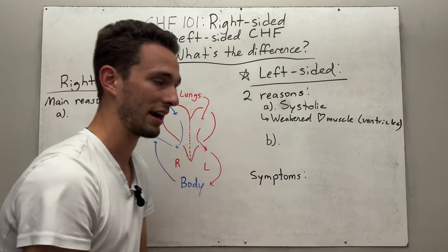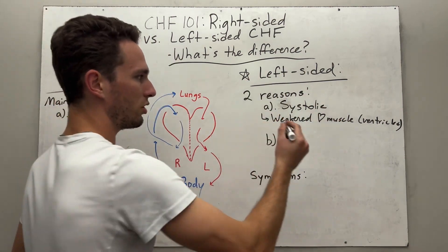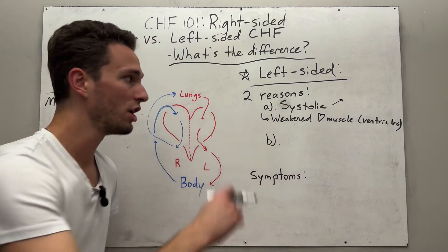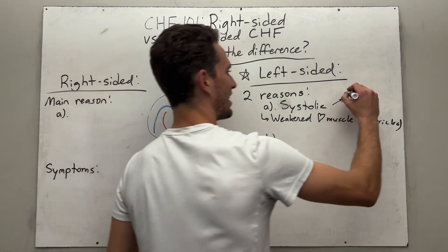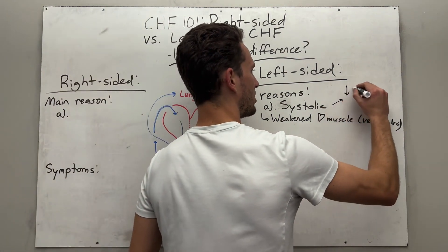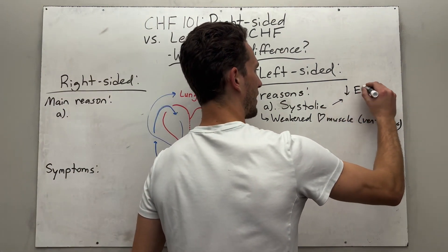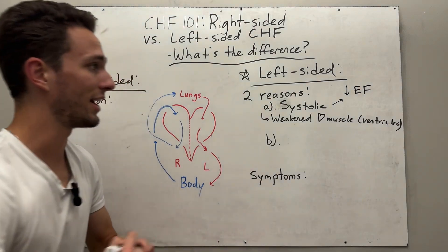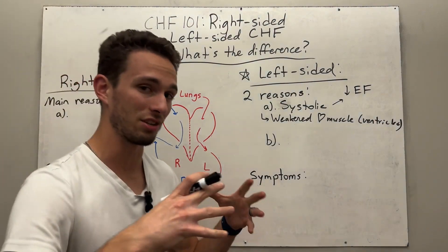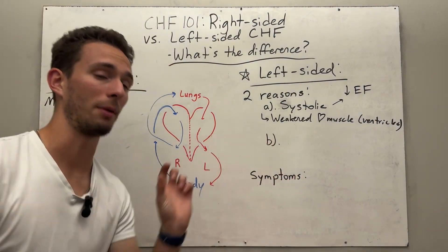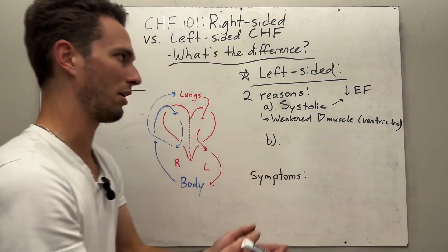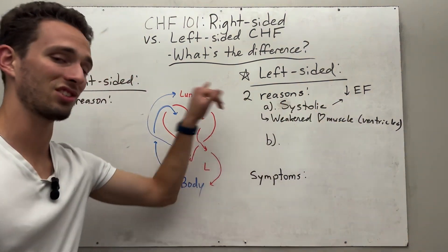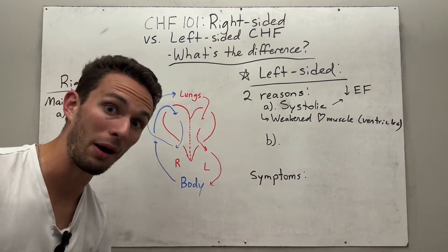When you look at systolic dysfunction, on echocardiogram you will see a decreased ejection fraction — that's the percentage of blood efficiently pumped out of the heart. So if ejection fraction is decreased, it's likely a systolic issue.